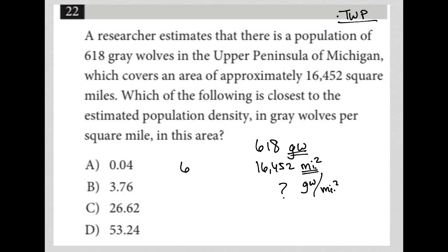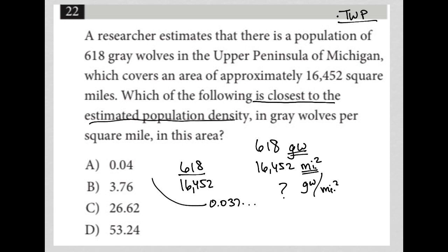All we're doing is going to our calculator and dividing 618 over 16,452. What I get is approximately 0.037. So which answer is closest to the estimated population density? That would be 0.04, so the answer is choice A.